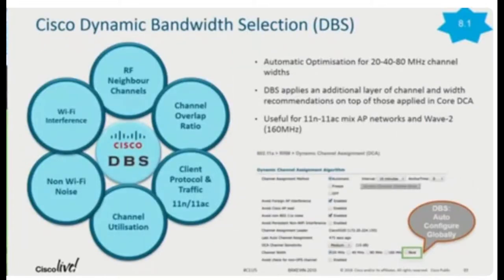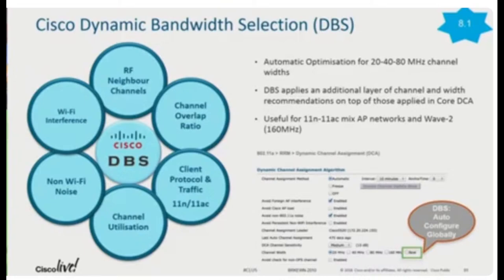Another option is DBS — Dynamic Bandwidth Selection. Are you going to use 20 MHz, 40 MHz, or 80 MHz channel bonding? My recommendation is: for a carpeted office, you can go with 40 MHz channel bonding. For high density deployments, stay with 20 MHz channel bonding because you have many more APs and more channel usage. Do not enable 40 MHz in a high density scenario. All of this can be configured in your RF profile. The RF profile for your keynote should use 20 MHz channel bonding, while a different RF profile for a regular floor can keep 40 MHz channel bonding.